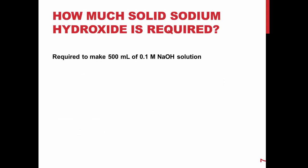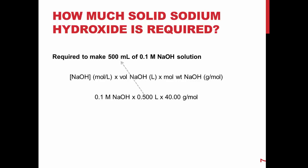In order to prepare your secondary standard of 500 milliliters of 0.1 molar sodium hydroxide solution, you will need to determine how much solid sodium hydroxide you must use. By multiplying the concentration wanted by the liters of solution needed, then multiplying by the molar mass of sodium hydroxide, you will find that you need approximately 2 grams of sodium hydroxide.